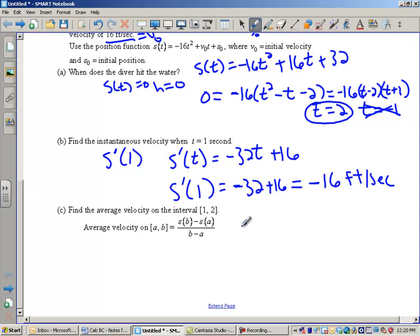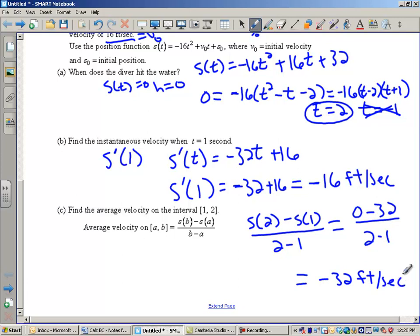We're going to practice the average velocity formula. So this is going to be s of 2 minus s of 1 all over 2 minus 1. Some of you flipped this on your test. It's the y values on top and the x values on the bottom. I already calculated. I know what s of 2 is. s of 2 is 0. And s of 1 is 32. I got that from my calculator, but you could plug in 1 up here, and you would get that it was 32. All over 2 minus 1, which would give me negative 32 feet per second. On average, we're falling negative 32 feet per second.